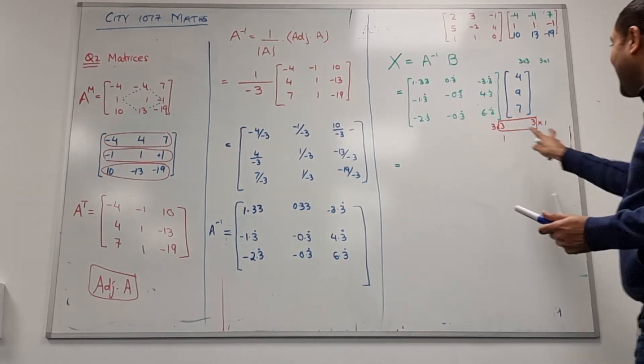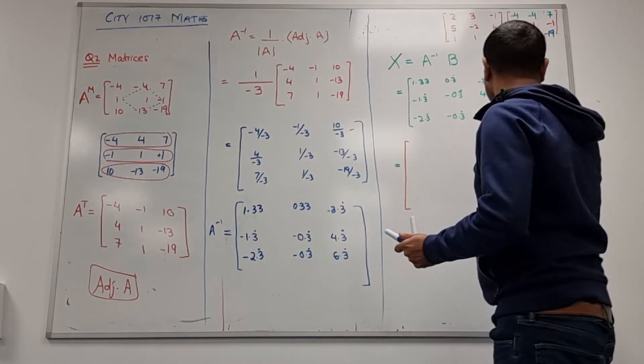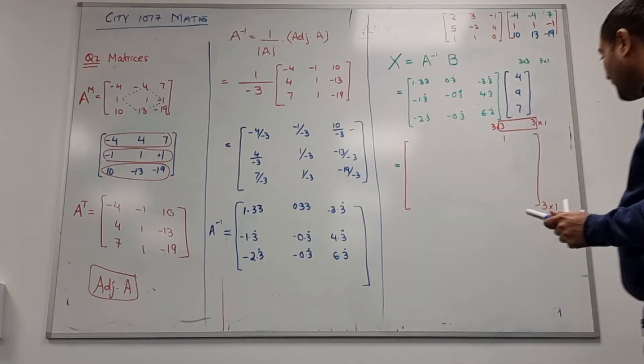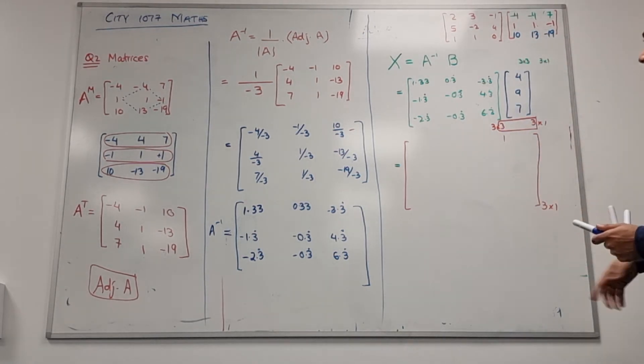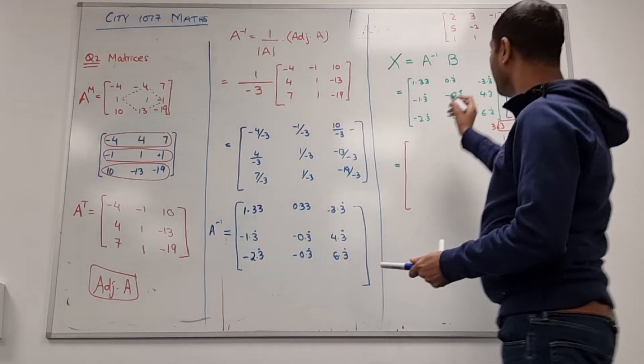Because they are the same I can multiply, and this 3 and this 1 will be the order of the resultant matrix. They have to be same so I can multiply, otherwise you won't be able to multiply at all. So the answer for the resultant matrix is 3 rows and 1 column.